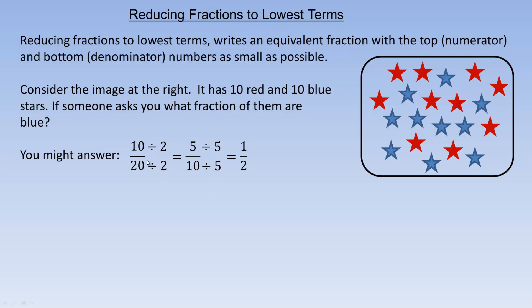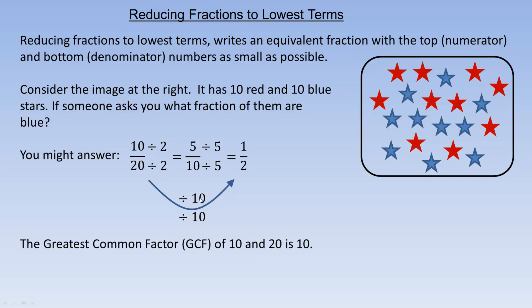Instead of going through a couple of steps, how do you get there directly? If you divide both 10 and 20 by 10, you get 1 over 2 directly. This 10 is said to be the greatest common factor, or GCF — the largest number that divides evenly into both 10 and 20. So if you divide by the greatest common factor, you'll get to lowest terms in one step rather than multiple steps.